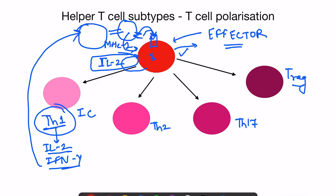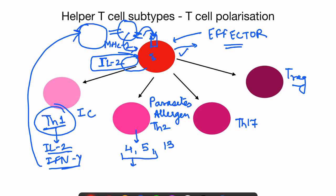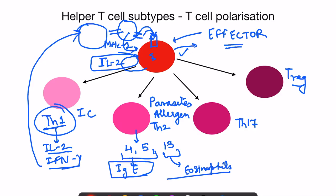If the antigen presented by the antigen presenting cell is a parasite or an allergen, then Th2 cells are formed. These Th2 cells secrete interleukin-4, interleukin-5, and interleukin-13. Interleukin-4 and interleukin-5 are responsible for B cell proliferation and maturation, and are important for the secretion of IgE antibody from B cells. Interleukin-13 is important for the recruitment of eosinophils. So this Th2 subset responds in the presence of parasites or allergens in the body.